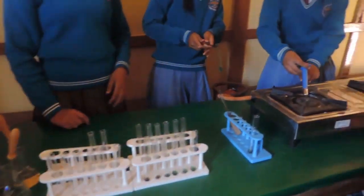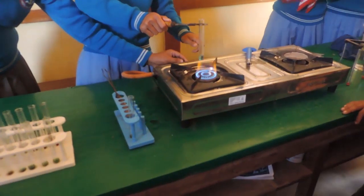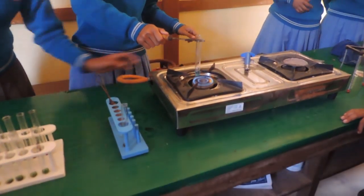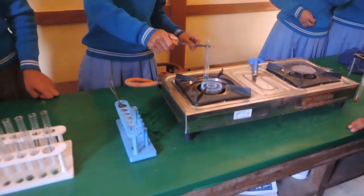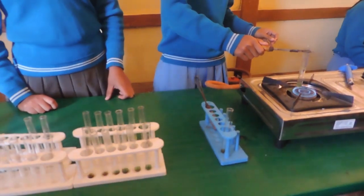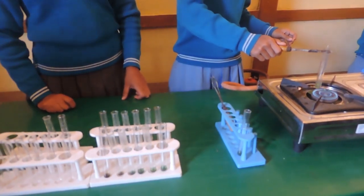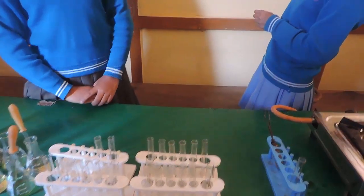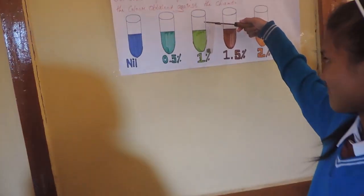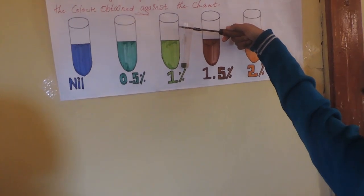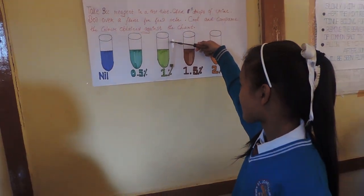So sugar has been detected. The method of the test shows the presence of sugar, which means the person can be considered diabetic.